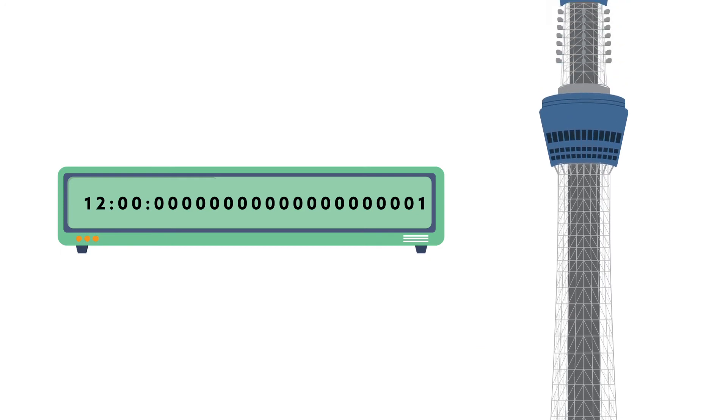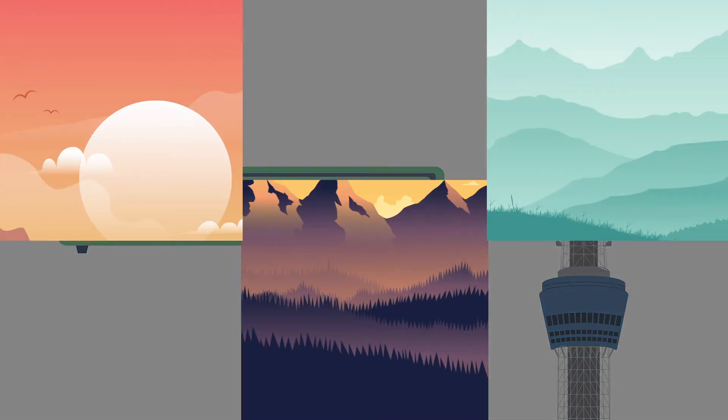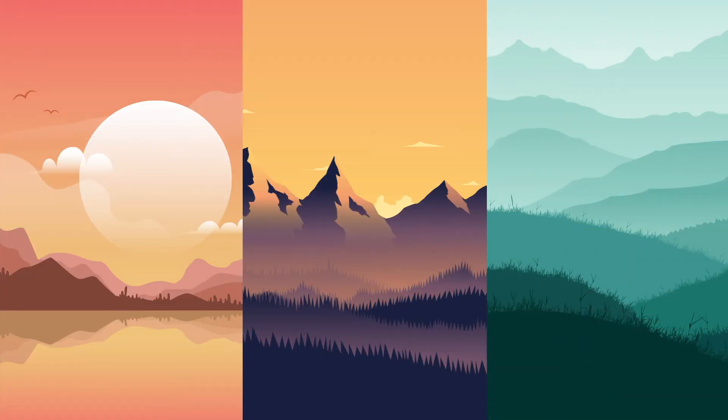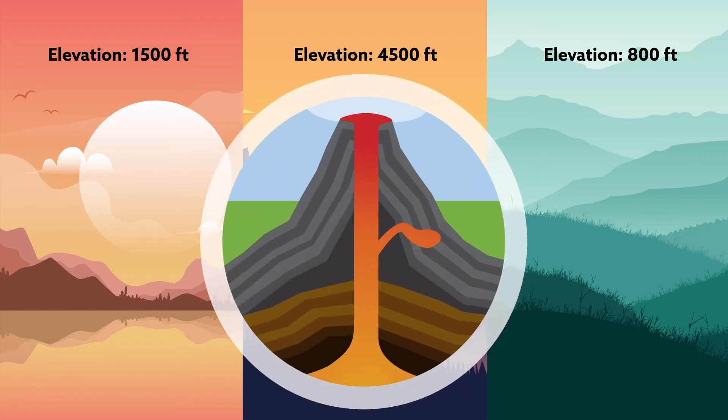And thus, the RIKEN-led team could verify Einstein's theory. But the true innovation is the clock's portability. Small and easy to transport, the clocks could be used to detect otherwise invisible differences in height. That includes foreboding differences in ground swelling in risky areas such as active volcanoes or regions of crustal deformation.